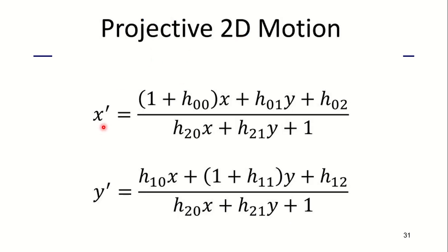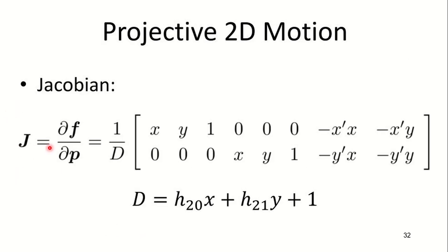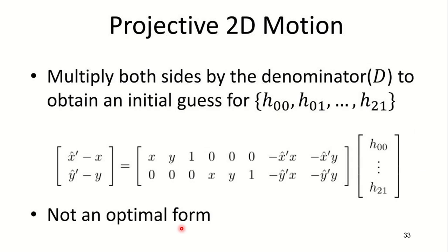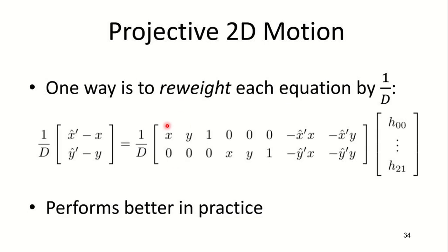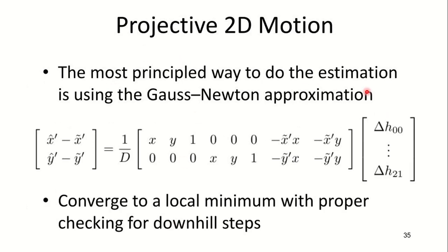In projective 2D motion, we have two points x' and y' which are given here. Your Jacobian matrix for the projective 2D motion is given, where D is the denominator. Multiplying both sides by the denominator to obtain the initial guess for the parameters of projective 2D motion, which will not be in optimal form. This is your Jacobian matrix which is not an optimal form. So you rewrite it by multiplying the factor 1/D with this equation, and this performs better in practice. The most principled way to do the estimation is Gauss-Newton approximation. Here is the matrix equation for that, which converges to a local minimum with proper checking for downhill steps. An alternative compositional algorithm has this simplified formula.